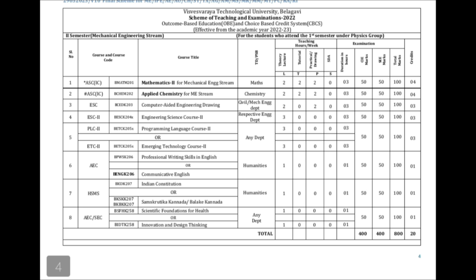Suppose you have cleared Mathematics and Chemistry — that's 4 plus 4, which is 8 credits. You need to add up the credits of cleared subjects. For example, if someone has backlogs in the three main subjects — Mathematics, Applied Chemistry, and Computer Aided Engineering Drawing — that's 4 plus 4 plus 3, which is 11 credits lost.